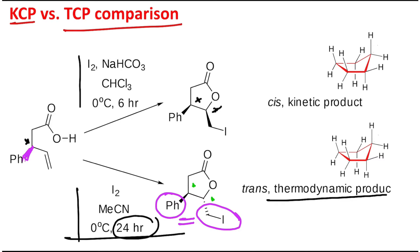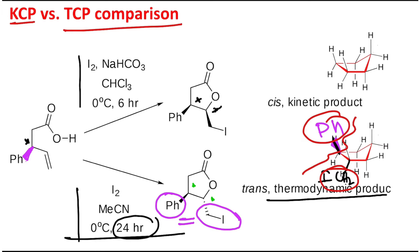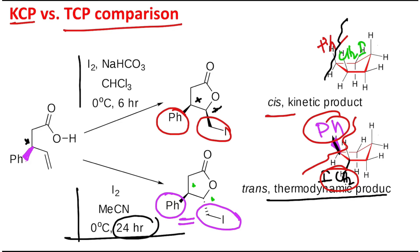To understand why the TCP is more stable, consider the conformation of the cyclopentane ring system. In the TCP, the phenyl group and the CH₂I group are in anti positions — they are far apart, so steric repulsion is minimum. In the cis product (KCP), the phenyl and CH₂I are on the same side, making the repulsion between these two groups relatively greater. That is why the trans (TCP) product is thermodynamically more stable.